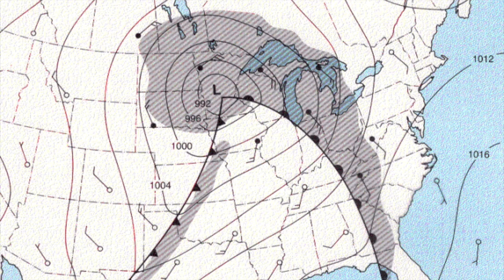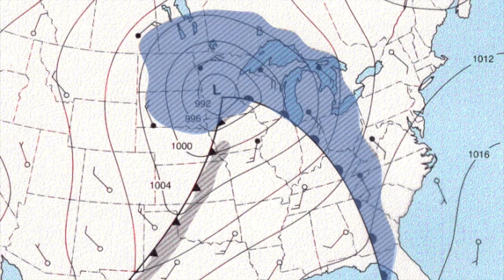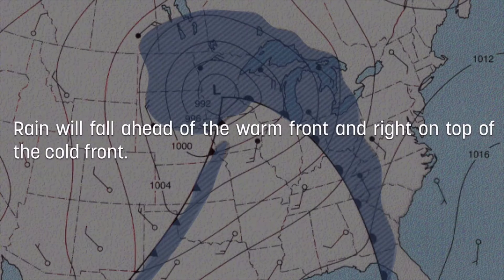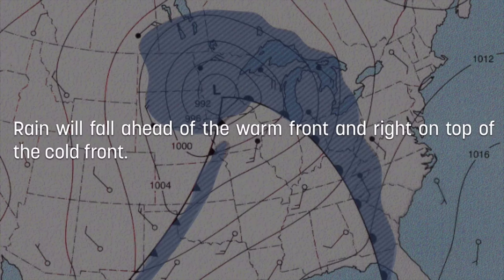Another important difference is how precipitation falls as a result of either front. If you look at the shaded area representing precipitation, in the case of the warm front it occupies the region at the front and all the way ahead of it — a large area of precipitation. In the case of the cold front, precipitation occurs only right at the boundary between cold and warm air. So rain will always fall ahead of a warm front, well ahead of the boundary, but at a cold front it's right at the boundary.